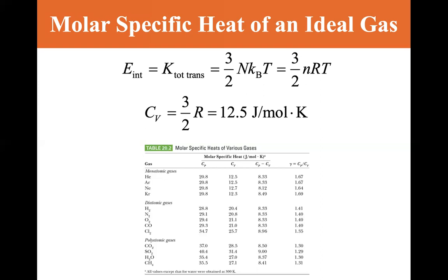And here's some CVs. You can see that for monatomic gas, they're all about this 12.5: helium is 12.5, argon 12.5, neon 12.7, krypton is 12.3. Now the variations come because these aren't real, the idealization breaks down somewhat, but they're close.